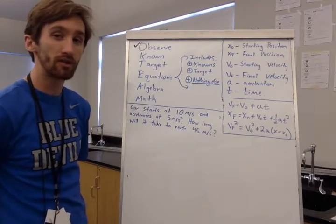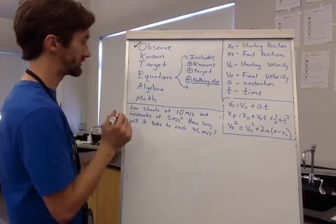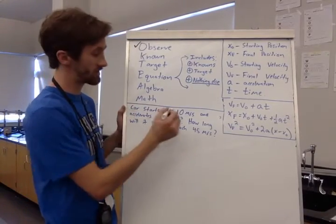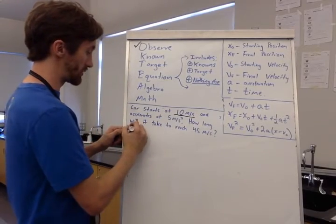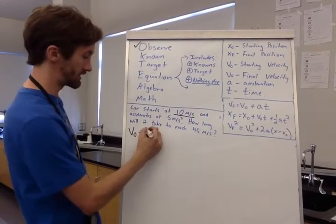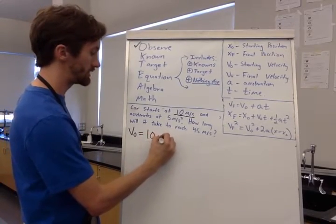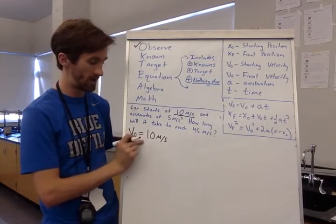Now I have to read through and figure out what are my knowns? What does the problem tell me? So a car starts at 10 meters per second. I know that my starting velocity or my initial velocity V0 equals 10 meters per second. And I have to write the symbol and the number.